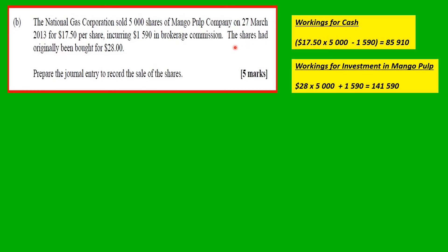Next, we work out the investment in Mango Pulp. The brokerage fees are considered part of the cost of the investment, so when you paid this you would debit the investment in Mango Pulp Company with an additional $1,590. So the original $28 per share: 28 by 5,000 shares gives $140,000, plus $1,590 brokerage gives a total investment cost of $141,590.